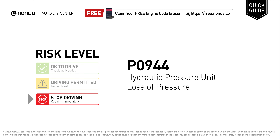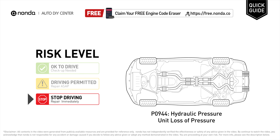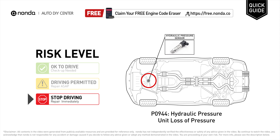P0944 is a diagnostic trouble code for hydraulic pressure unit loss of pressure. Under this circumstance, stop driving and repair your vehicle immediately. It means the PCM has detected a significant drop in transmission pressure and that the pump has both lost its prime and failed the prime test.